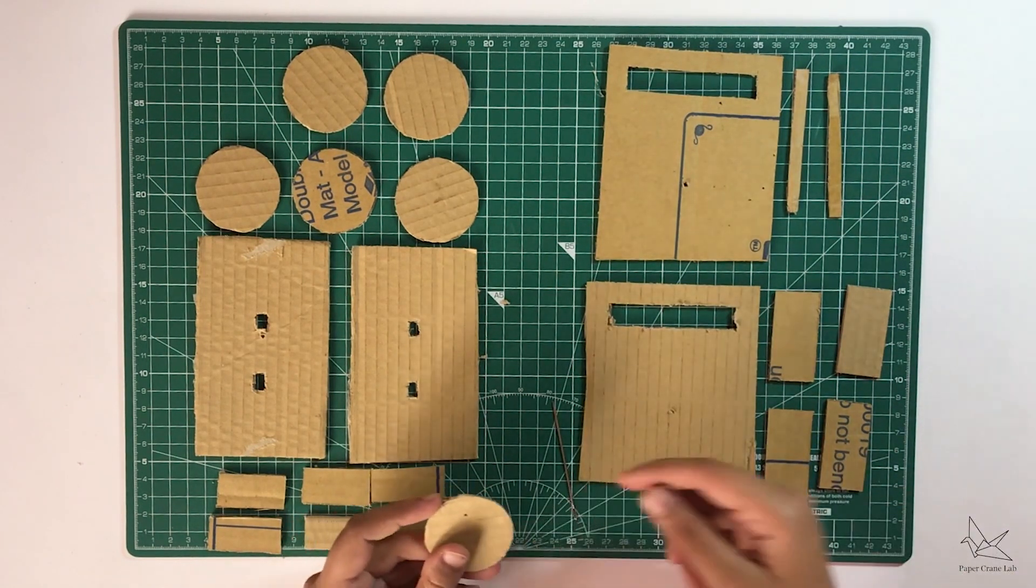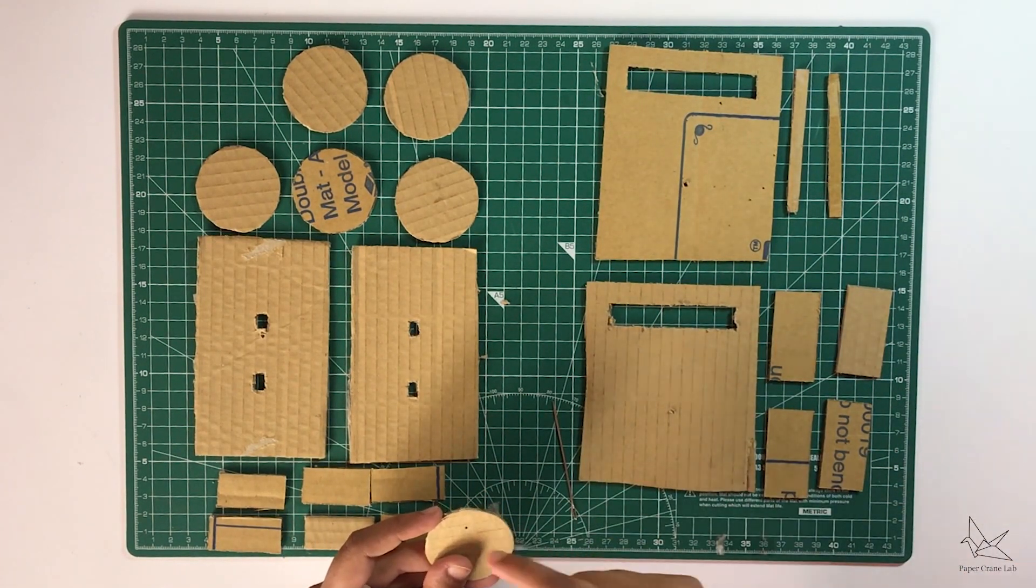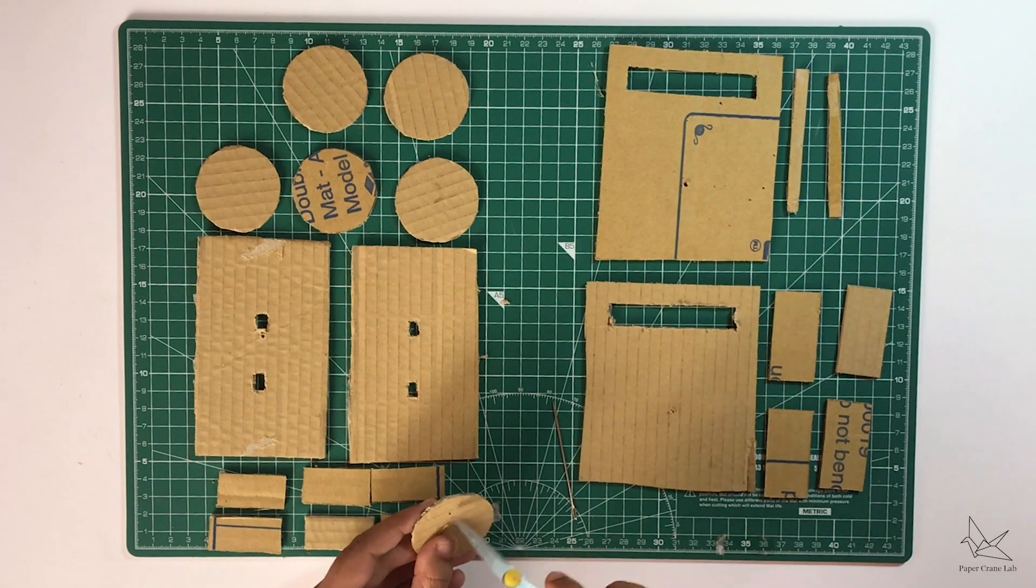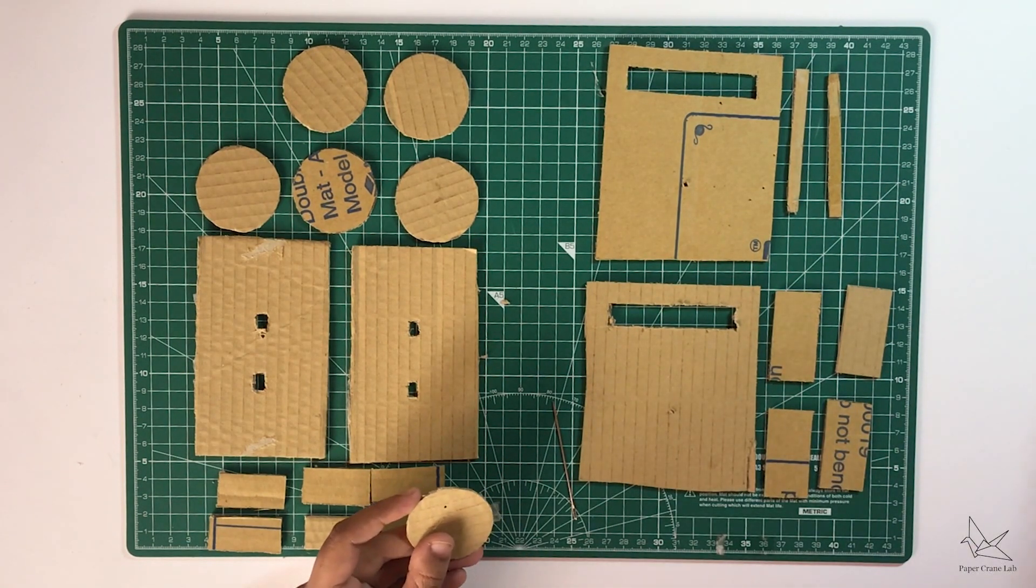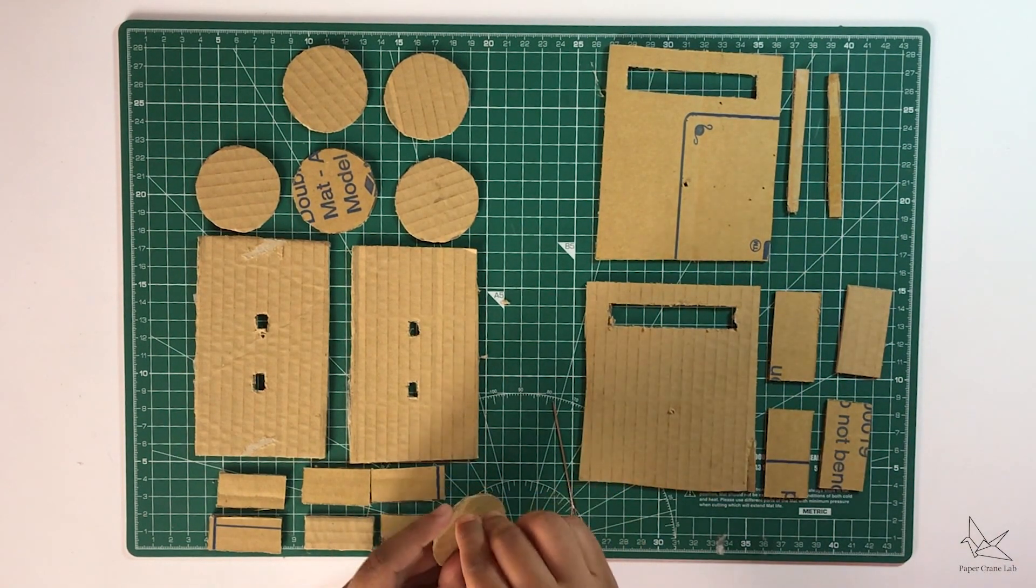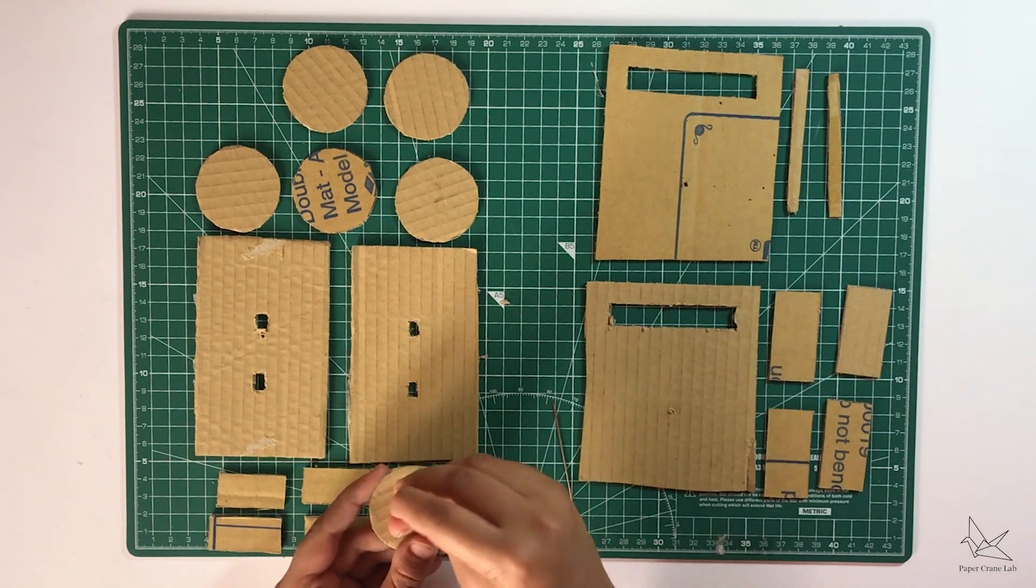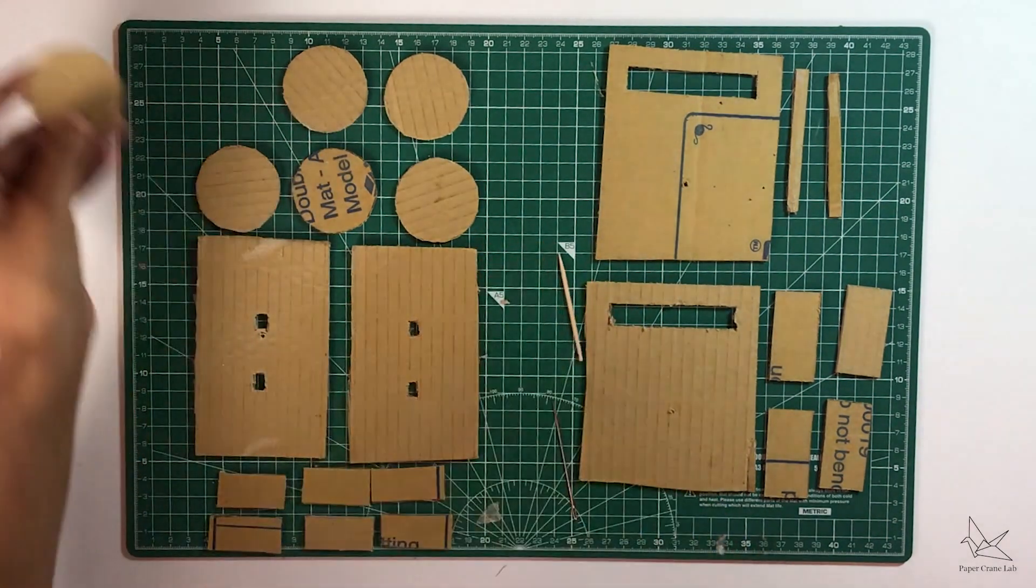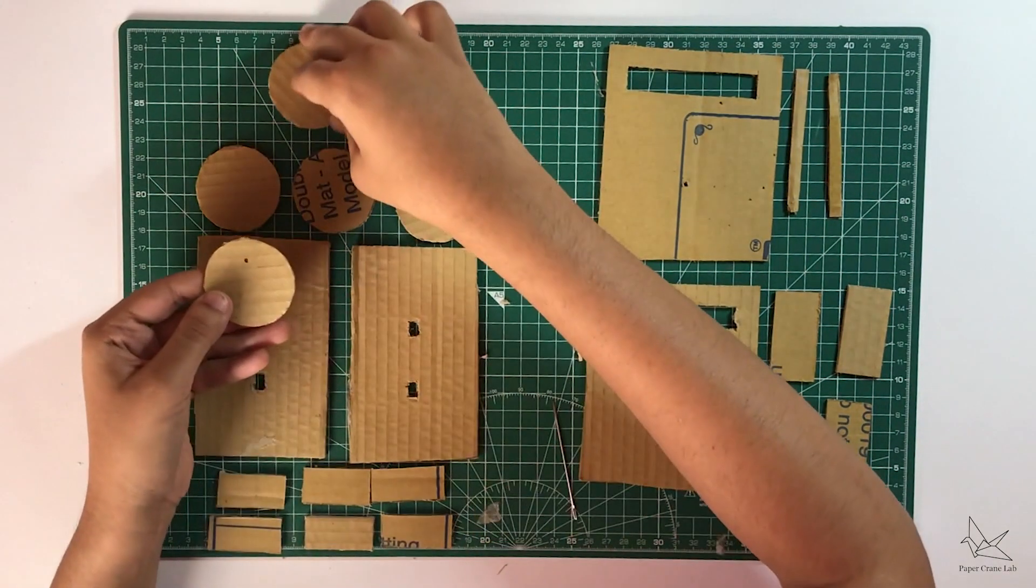We can use a pen and then expand the hole using a tiny pair of scissors, or we can even just directly use our toothpick and make the hole because that's what's going to be going in through this hole. So let's make the holes on the circles.